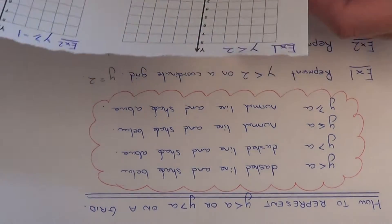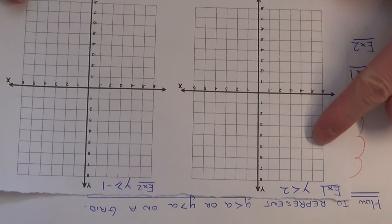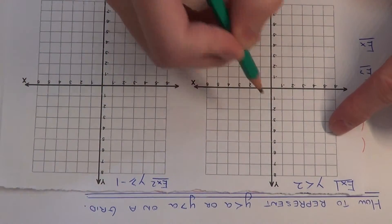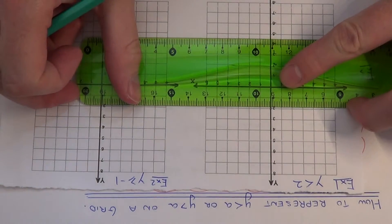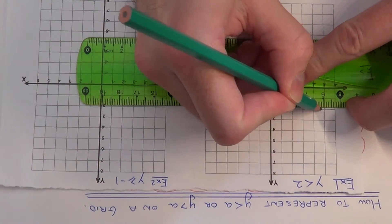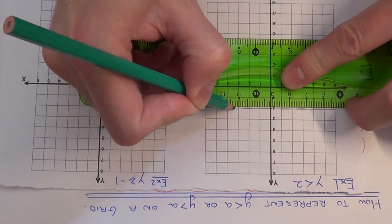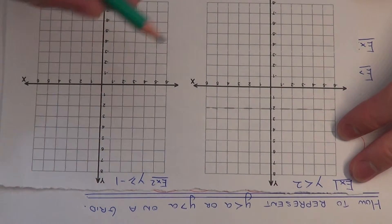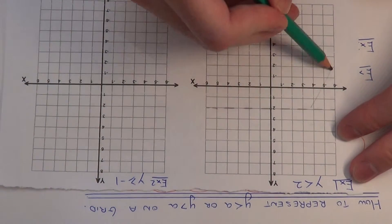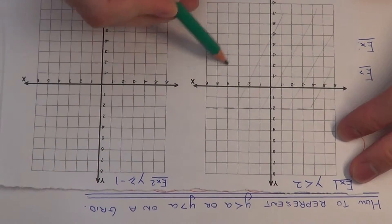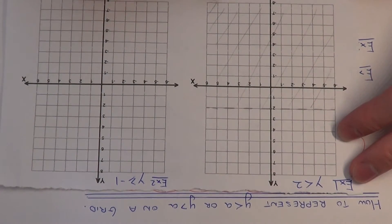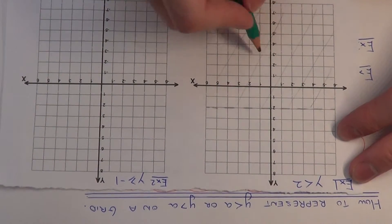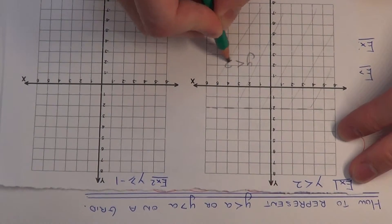So on our coordinate grid, we draw a dashed line going through the y-axis at 2. We then shade below the line, because this is where the y-coordinates are less than 2. We mark the shaded region as y is less than 2.